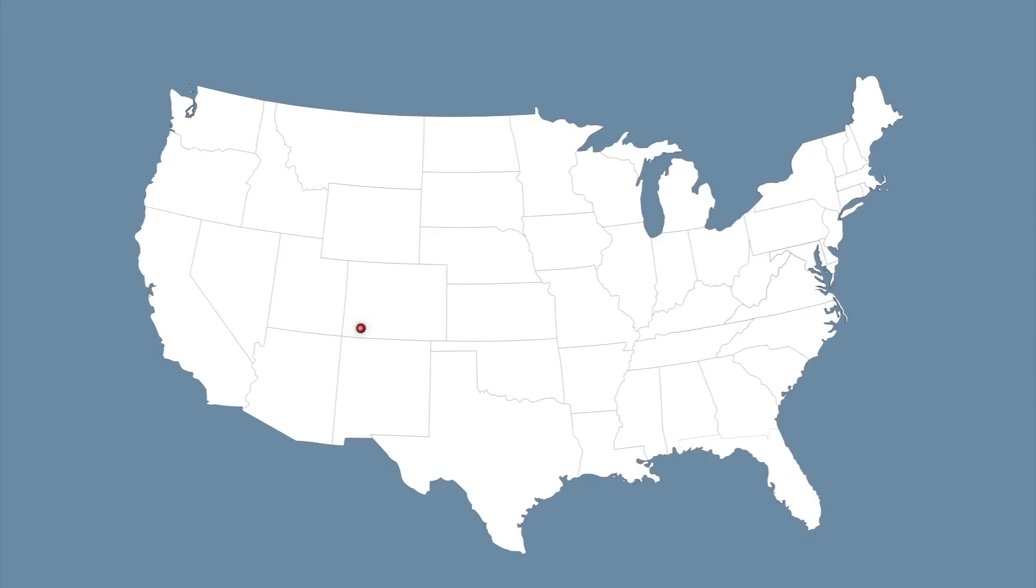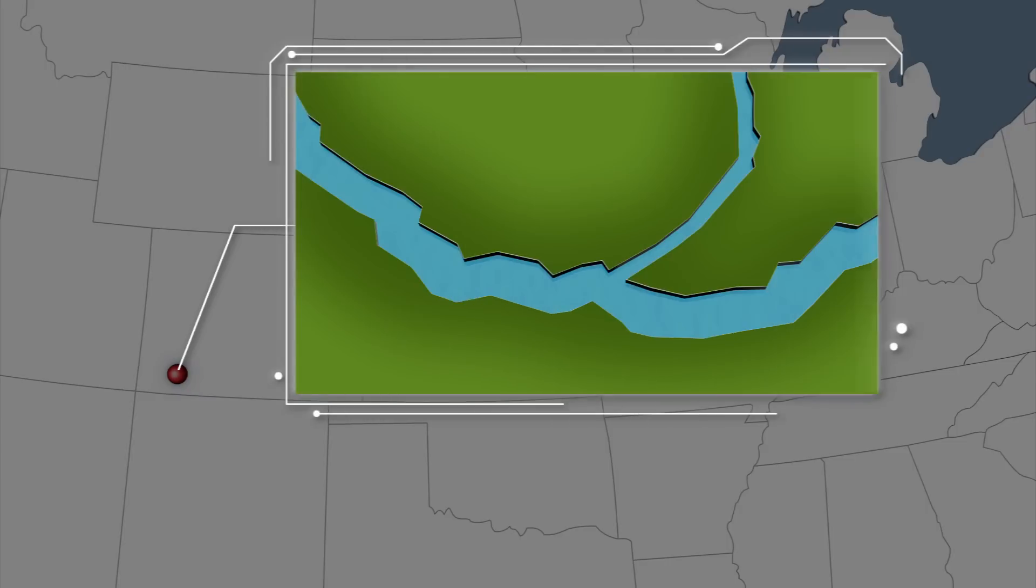The polluted water flowed along the Animas River in Colorado and then into the San Juan River in New Mexico.